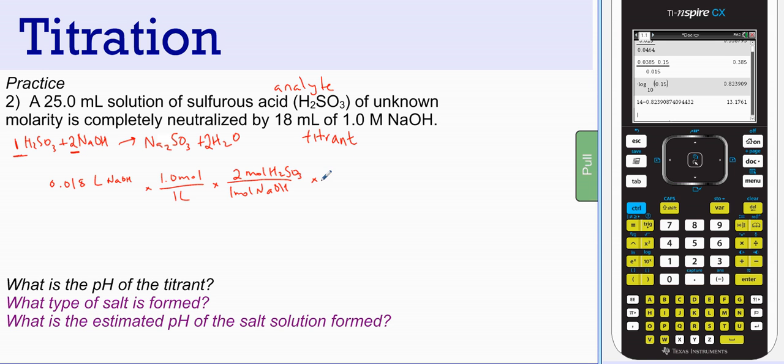So I have 18 milliliters, 0.018 liters of my titrant sodium hydroxide. That's where I always begin. And then my molarity of my titrant which is sodium hydroxide, 1.0 moles for every 1 liter of sodium hydroxide. Then I can do my mole ratio. 1 mole of sodium hydroxide requires 2 moles of sulfurous acid for my balanced reaction. And then I can divide by the volume I used, 0.025 liters of sulfurous acid. And the molarity of my sulfurous acid is 1.44 molar.